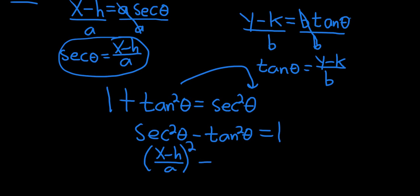And then same thing here. Tangent of theta is y minus k over b, so we have y minus k over b, and the whole thing is squared, and that equals one.